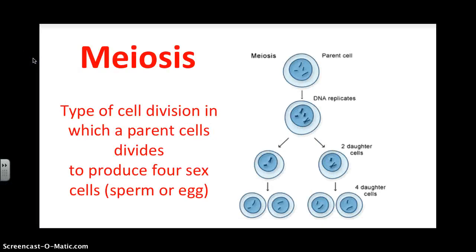Meiosis is a type of cell division in which a parent cell divides to produce four sex cells. In males, this is how sperm is made, and in females, this is how eggs are made. In humans, this is also why sperm and egg cells only have half the amount of chromosomes that a regular cell has.